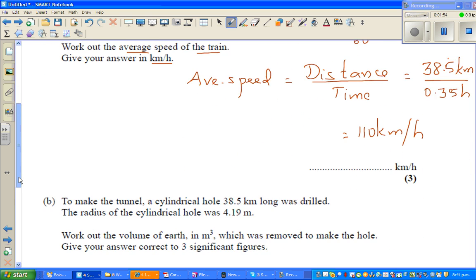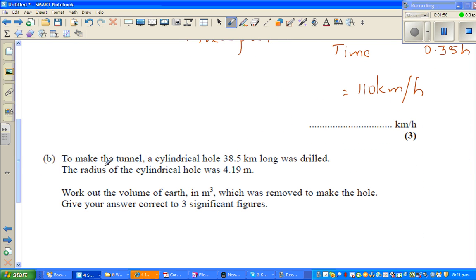The next question: to make the tunnel, a cylindrical hole which is 38.5 km long is drilled. The radius of the cylindrical hole is 4.19 meters. Work out the volume in meter cube.